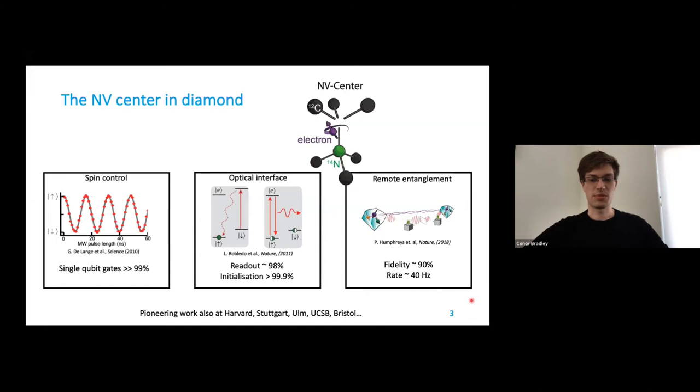But what makes the NV center quite special is that it combines these spin properties with a really good optical interface. So if we shine laser light on the defect, we can access spin conserving and non-conserving transitions, and this gives us single shot readout and spin initialization both with very high fidelity. Finally, light that the NV emits in the zero phonon line is optically coherent, and this means it can be used to realize these remote entanglement links, especially by the group of Ronald Hanson also at Delft. And we've seen some really cool demonstrations including the loophole-free Bell test a couple of years ago, and more recently deterministic entanglement delivery across the network.